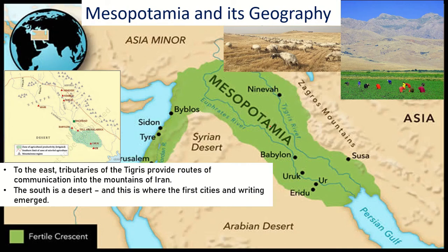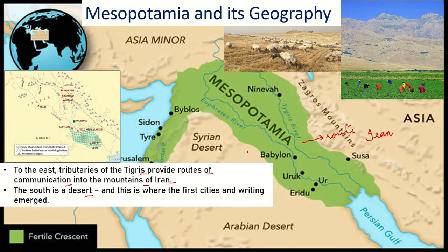Welcome to this module on Mesopotamia and its geography. To the east, the tributaries of the Tigris provide a route of communication into the mountains of Iran. To the south we have the Syrian desert, so it is bordered by desert on the southern side. Here we can see where the first cities and the writing system emerged.